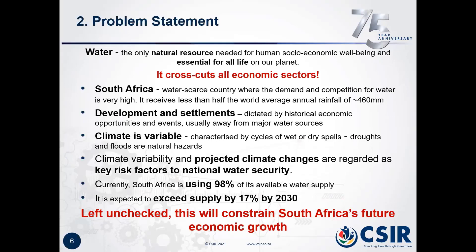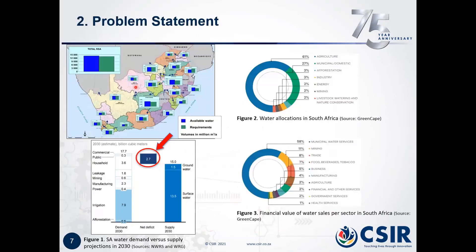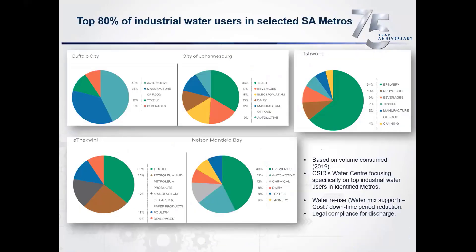The problem, left unchecked, will constrain our future economic growth. The 15 billion cubic metres per annum threshold is anticipated to be reached very soon, and by 2030 an additional 2.7 billion cubic metres will be required. Looking at the way we have disaggregated our hydrological units — we have 19 water management areas. Our hydrological balance of available water versus requirements is quite often exceeded in the key areas. We do have some spare capacity, but the options for augmentation become very important.